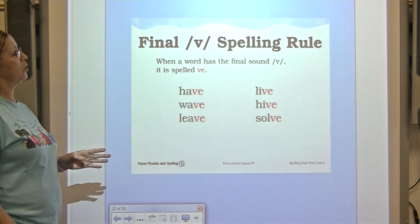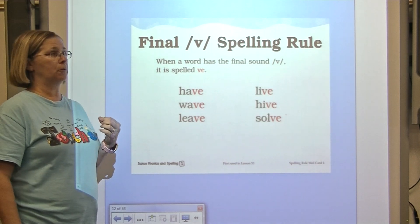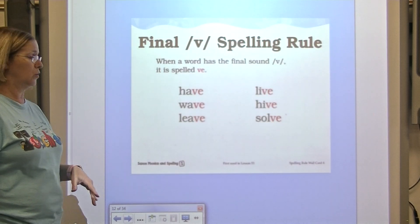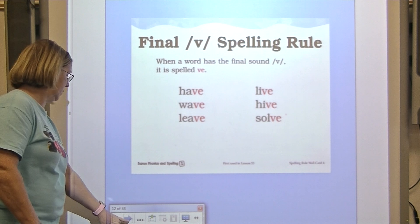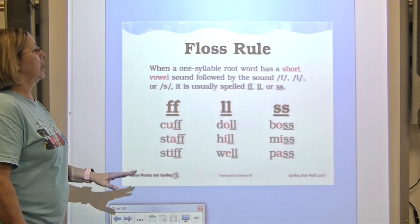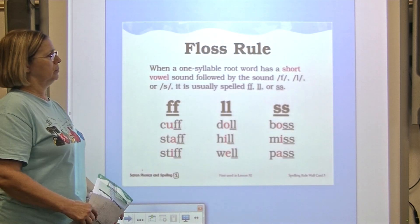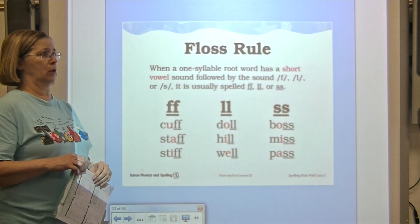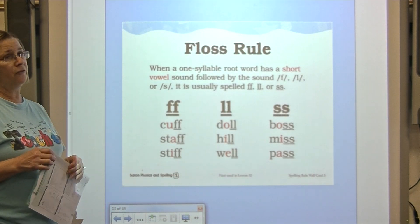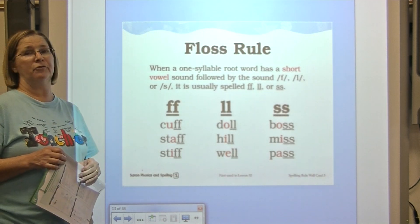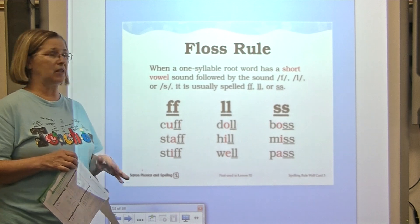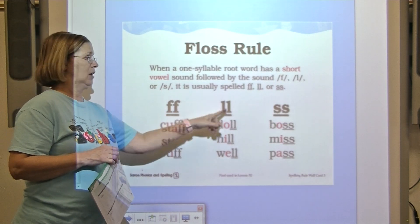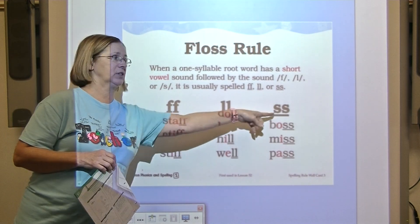When spelling a word that ends with the V sound, we use VE — English words don't end with the letter V. Our floss rule: when a one-syllable root word has a short vowel sound followed by the sound F, L, or S, we use twin consonants to spell F, L, or S.